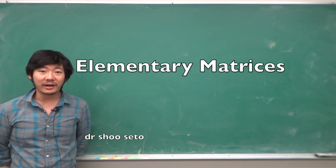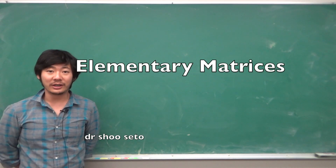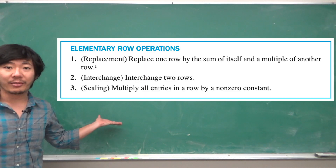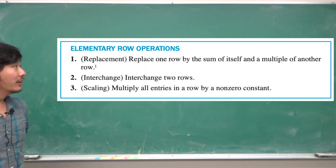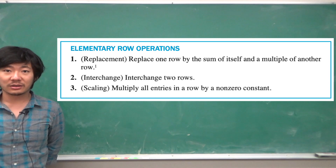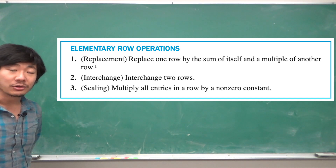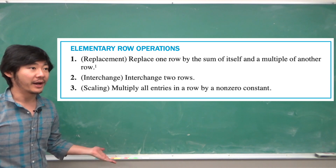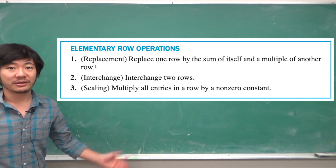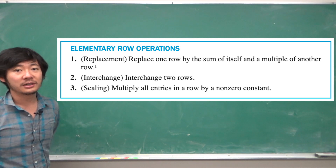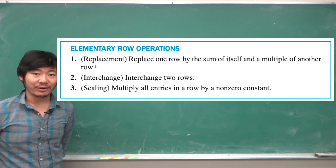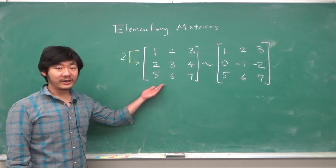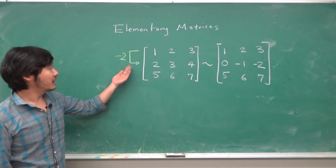In this video we will talk about elementary matrices. Recall the elementary row operations: you can replace rows, you can interchange rows, and you can multiply a row by a non-zero scalar. These are the allowed row operations. So what are elementary matrices?